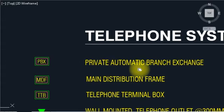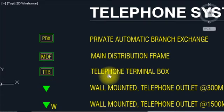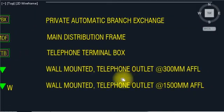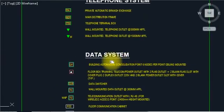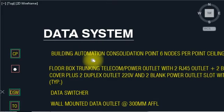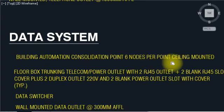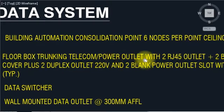EBX private automatic patch exchange. PDF — main distribution frame. TDB — telephone terminal box. Wall mounted telephone outlet. Data system CB TDB building automation consideration points. Six noted per ceiling mounted. Floor box racking telecom, telecom power outlet.